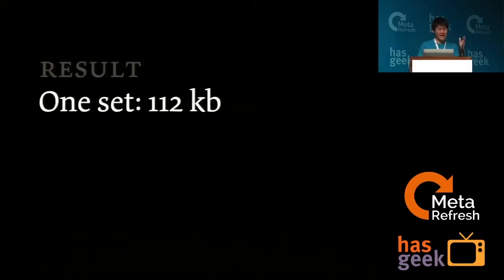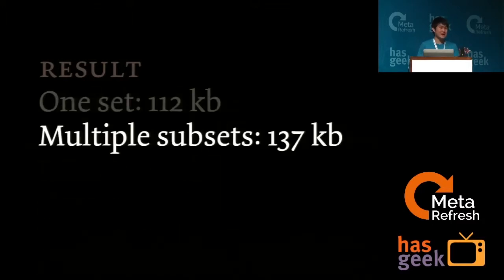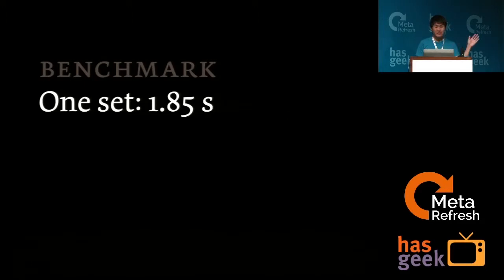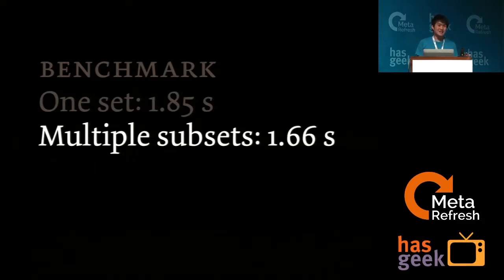Here are my results after splitting the Latin and Latin-extended character sets into uppercase, lowercase, punctuation, and numerals. The fonts become super light. Interestingly, the more you split, the less efficient it is — the aggregate size gets larger. The question is: how much do you want to split and benefit from parallel loading? Loading ten 5-kilobyte files is probably faster than loading one 100-kilobyte file. I tested timing with Web Inspector: one set with everything took 1.85 seconds, while multiple subsets loaded faster, though it doesn't download faster — it renders faster.